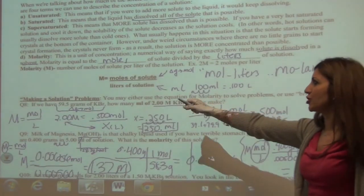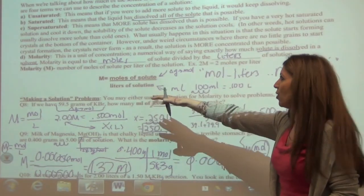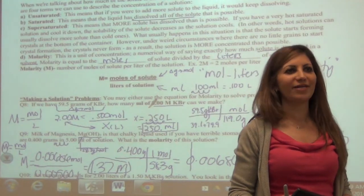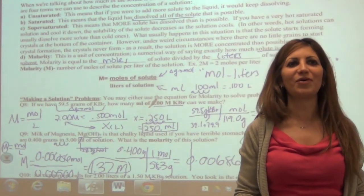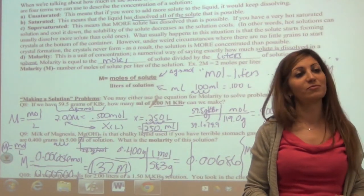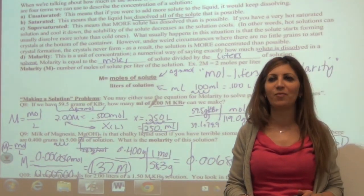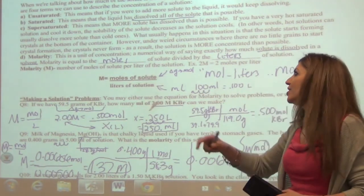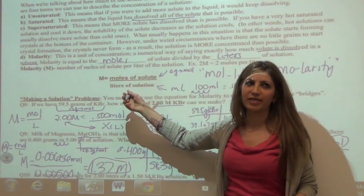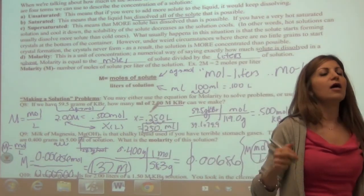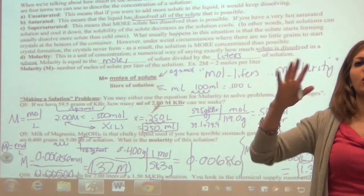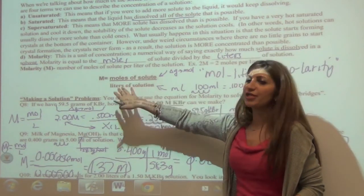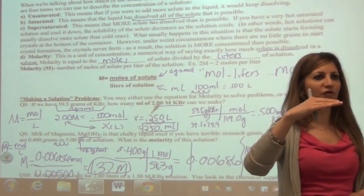When making solutions, we use the molarity equation. Molarity — everybody say 'molarity, moliters.' Molarity is moles over liters. Moles of what? Of the solute — the solute is what goes in and gets dissolved into the solvent. And liters is your total volume overall.